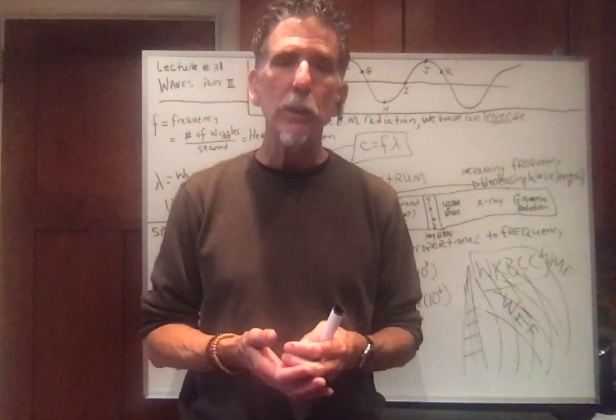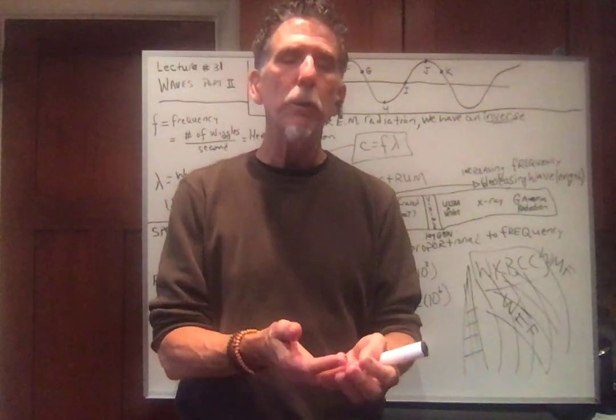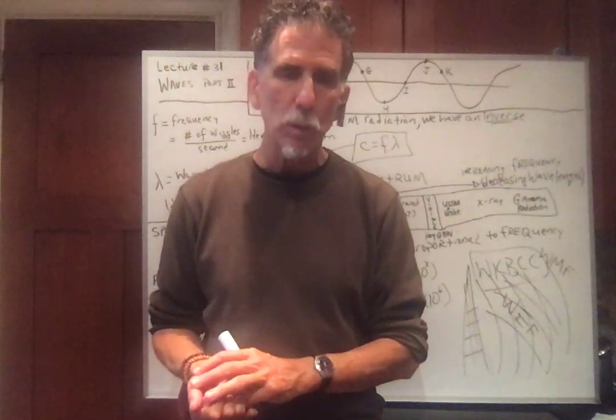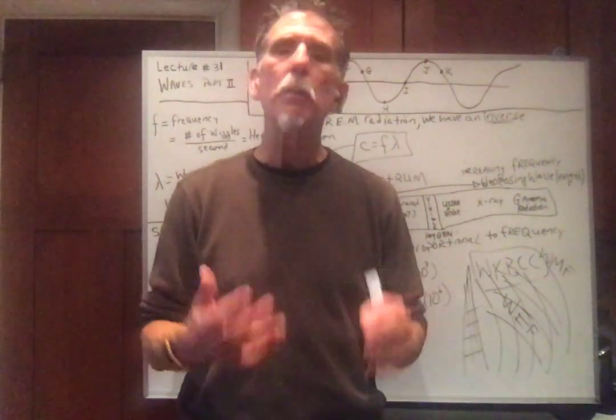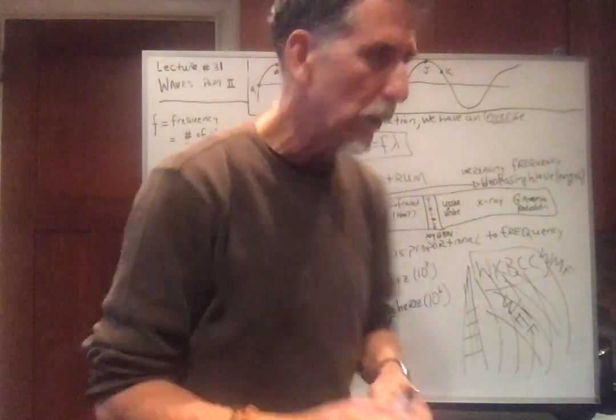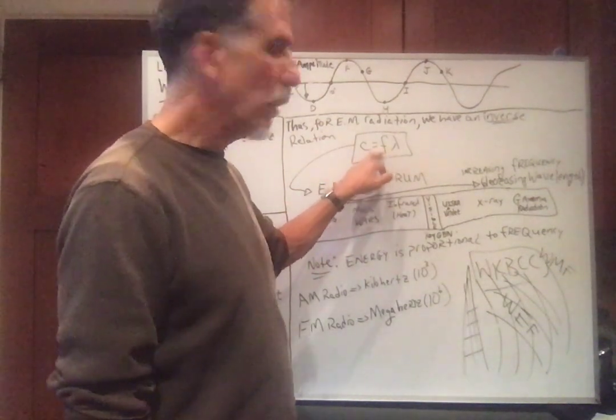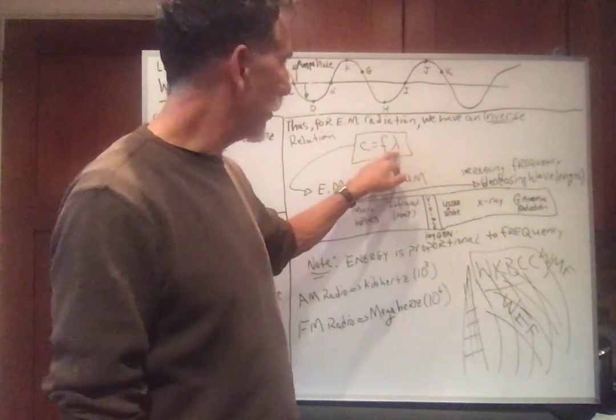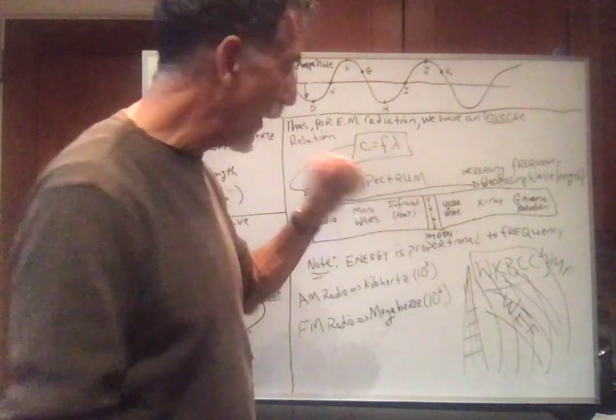So if you double the pressure, the volume decreases by two. If you quadruple the pressure, the volume decreases by four. If you increase the volume by 17 times, then the pressure would decrease by 17 times. It's an inverse relation. The same is true for this. Since we have a constant, if you double the frequency, the wavelength halves. If you quadruple the frequency, the wavelength decreases by one-fourth.